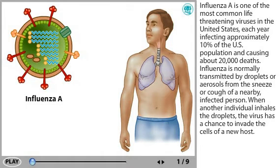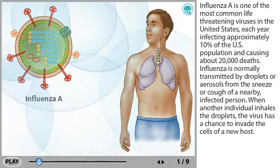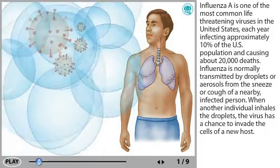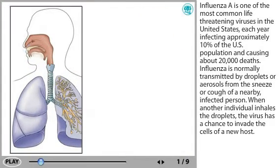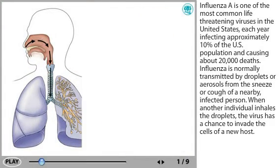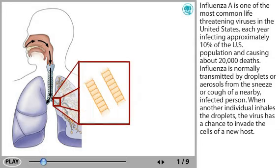Influenza A is one of the most common life-threatening viruses in the United States, each year infecting approximately 10% of the U.S. population and causing about 20,000 deaths. Influenza is normally transmitted by droplets or aerosols from the sneeze or cough of a nearby infected person. When another individual inhales the droplets, the virus has a chance to invade the cells of a new host.